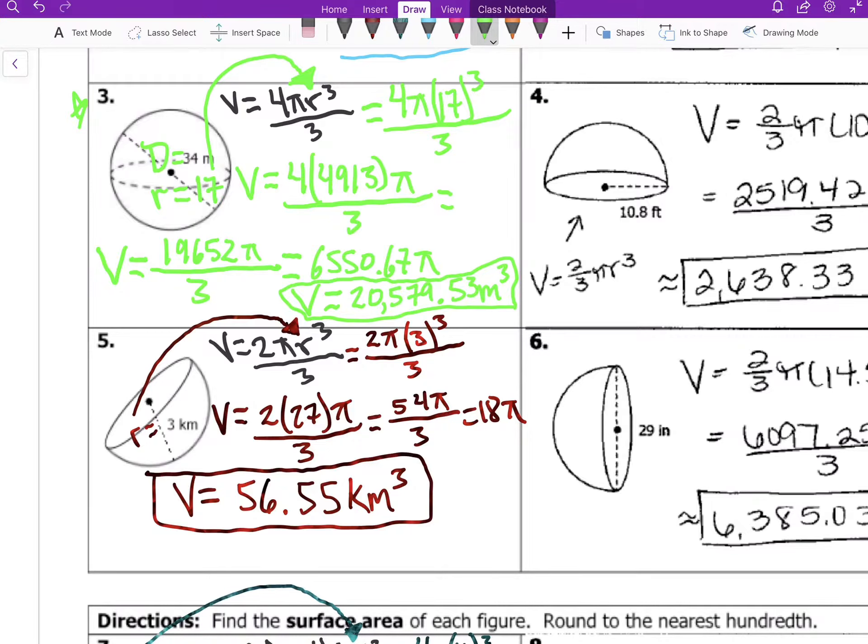So the formula for a hemisphere is 2πr³ over 3. We got our radius, we just plug it in. We plug it in here and then multiply 3 times 3 times 3, which is 27, times 2 is 54, divided by 3 is 18. 18 times π is 56.55 kilometers cubed for the volume of this hemisphere.